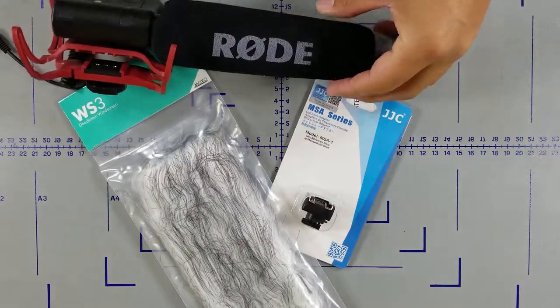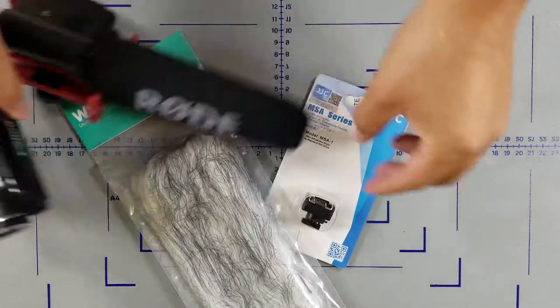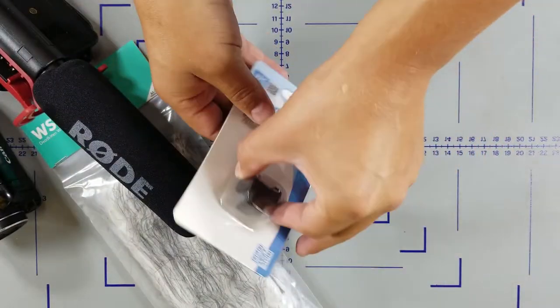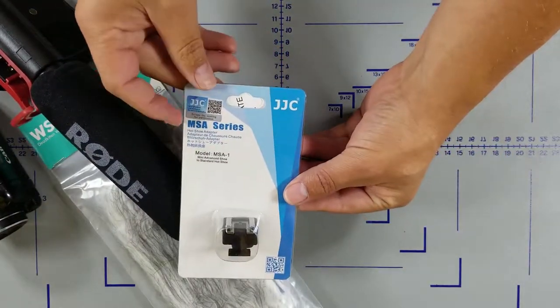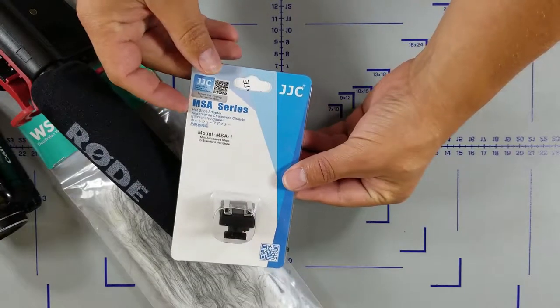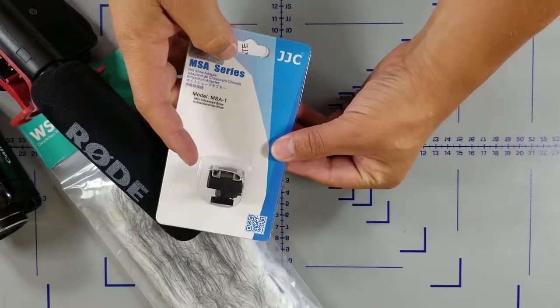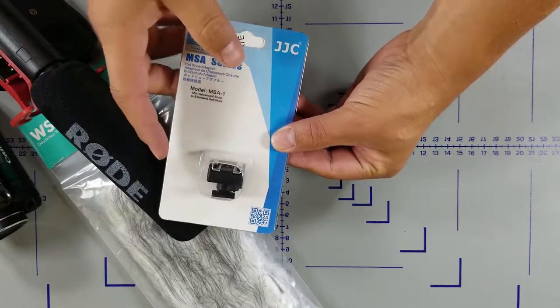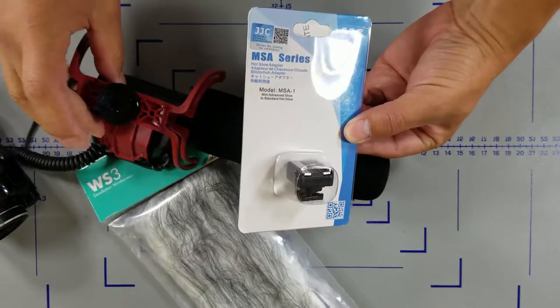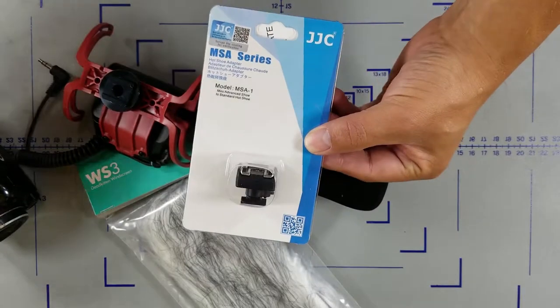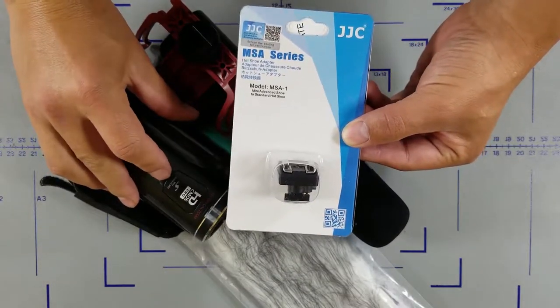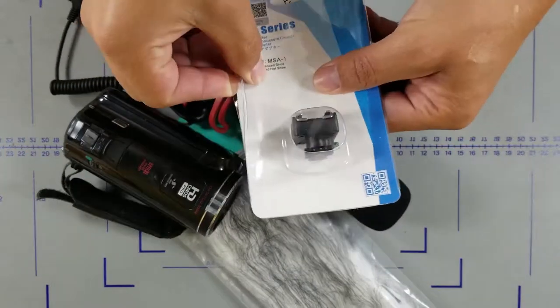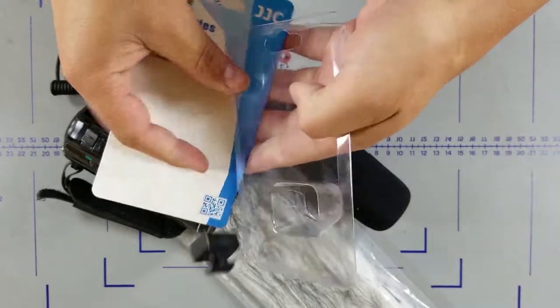So to use this mount on our camera, we needed this cold shoe adapter to fit a standard hot shoe size that the Rode microphone has and get into our advanced mini shoe. So let's open that up.